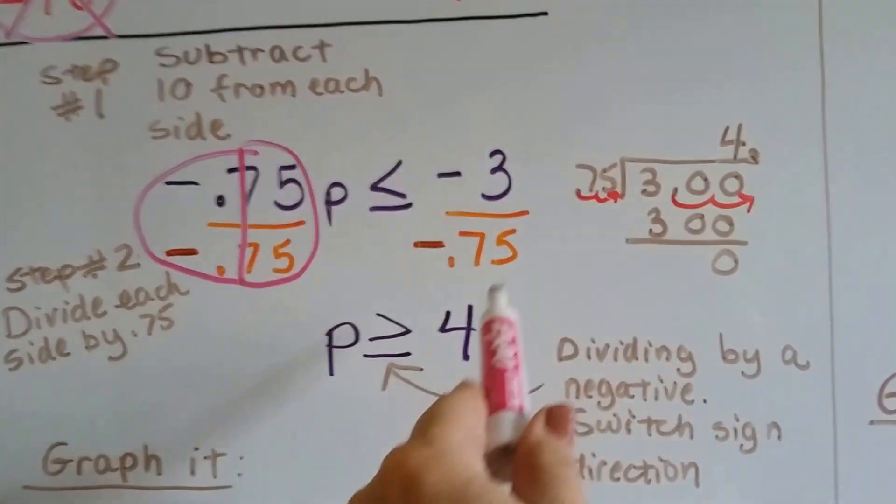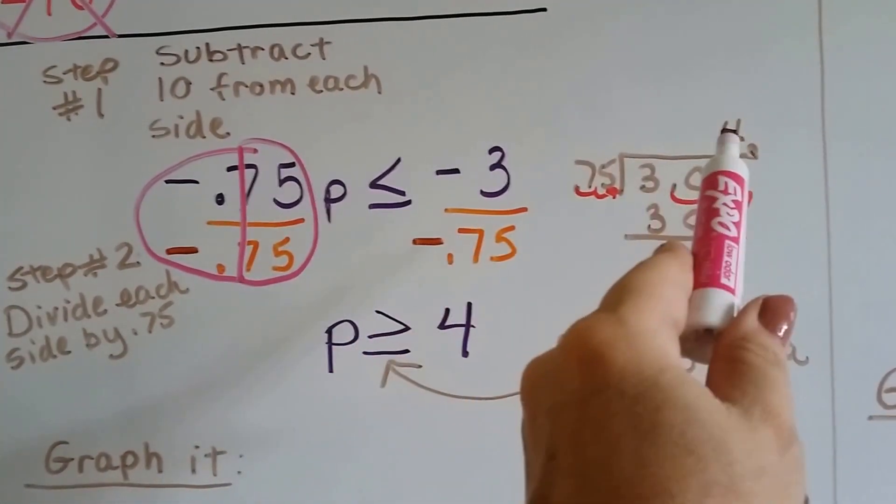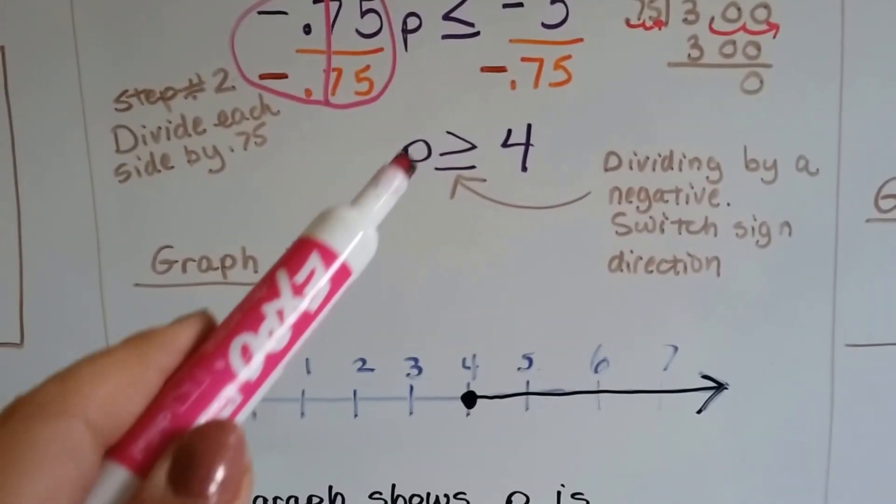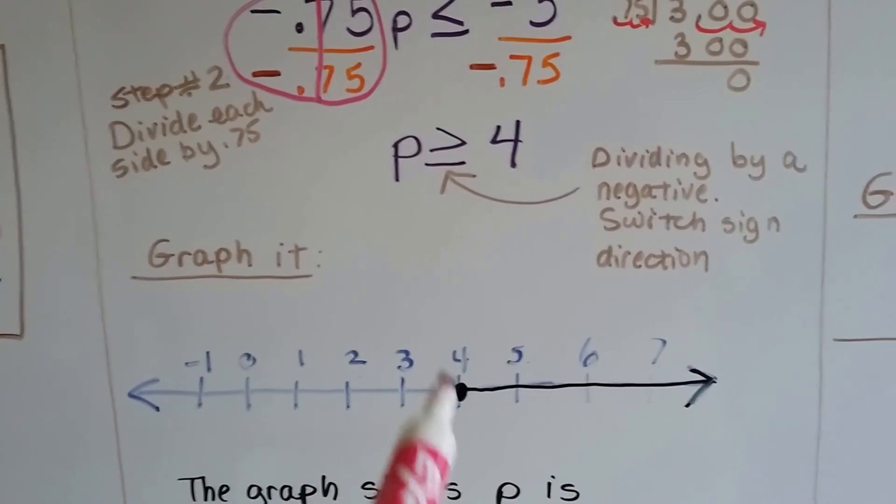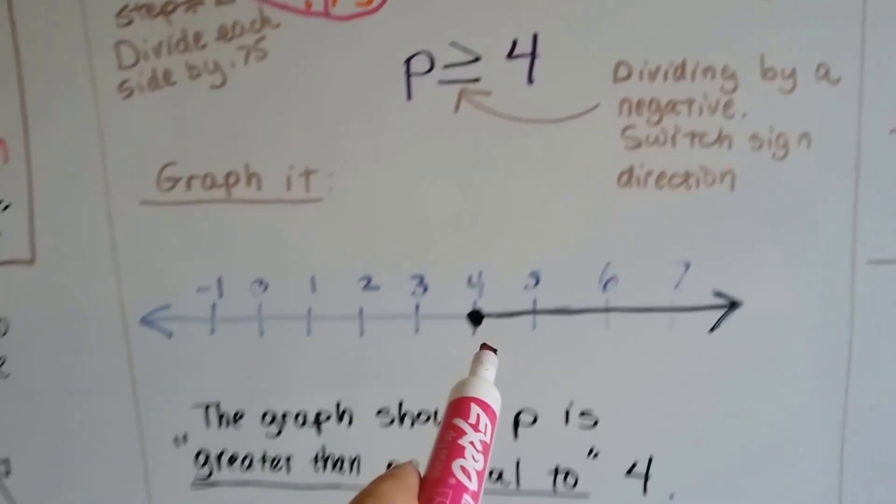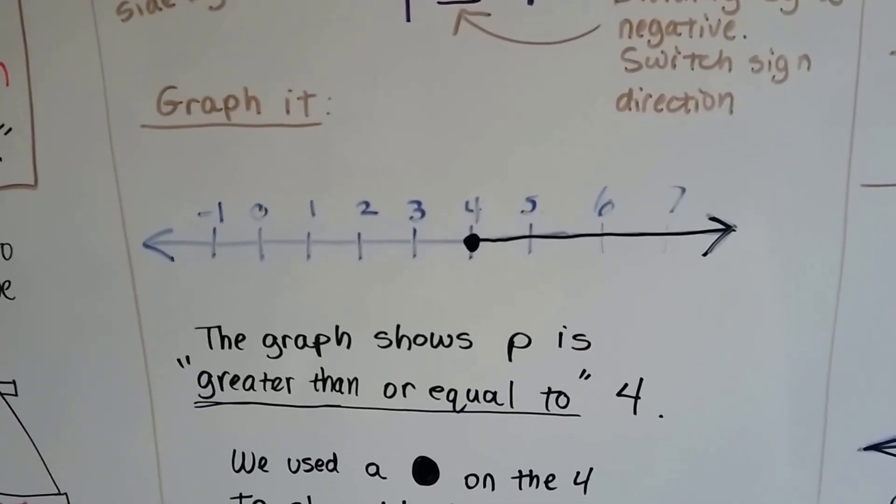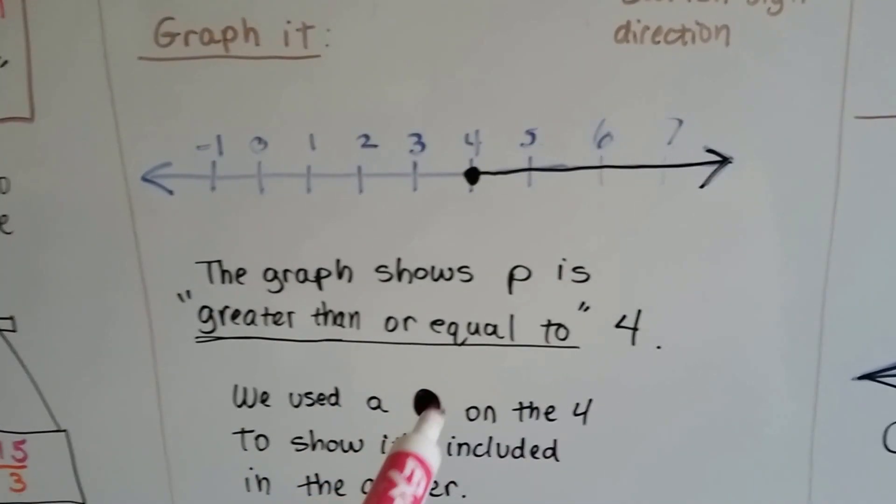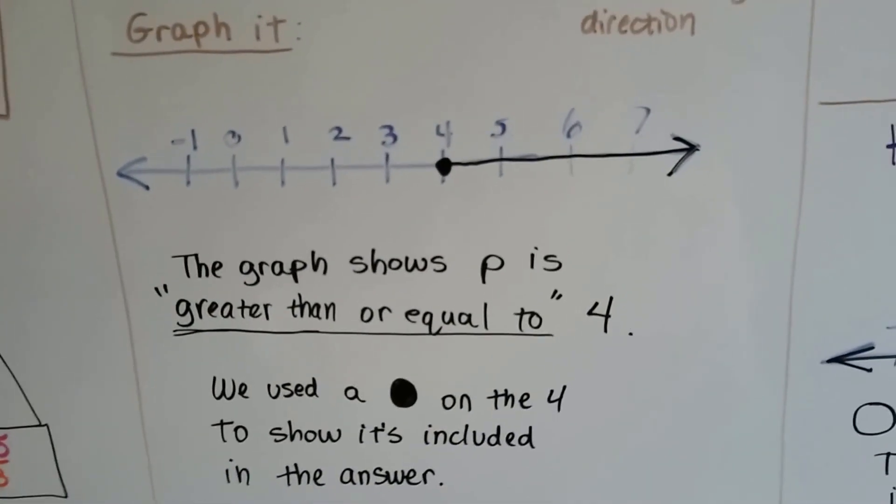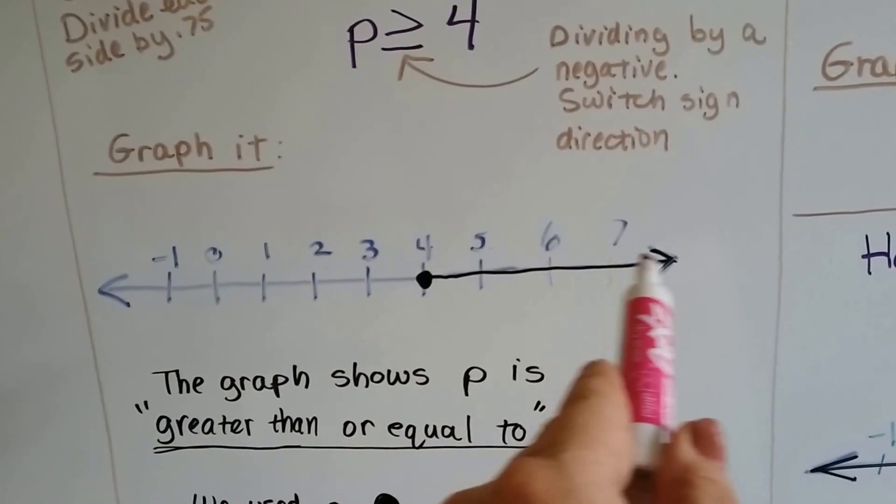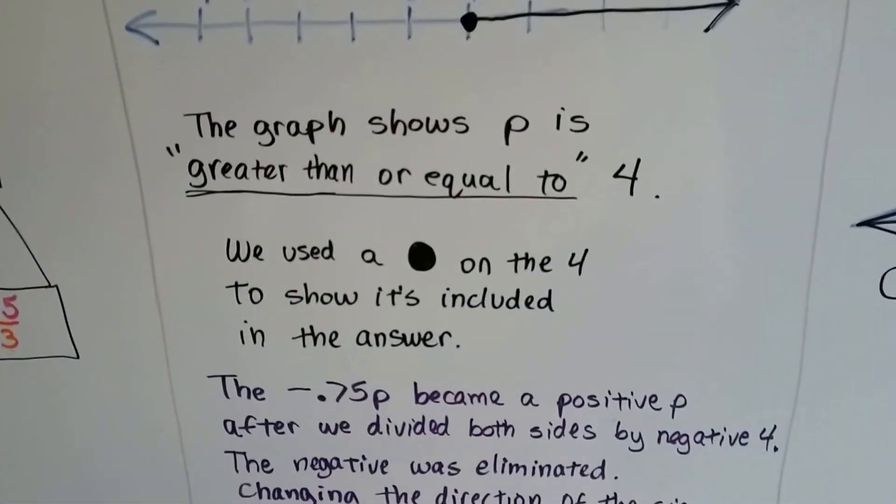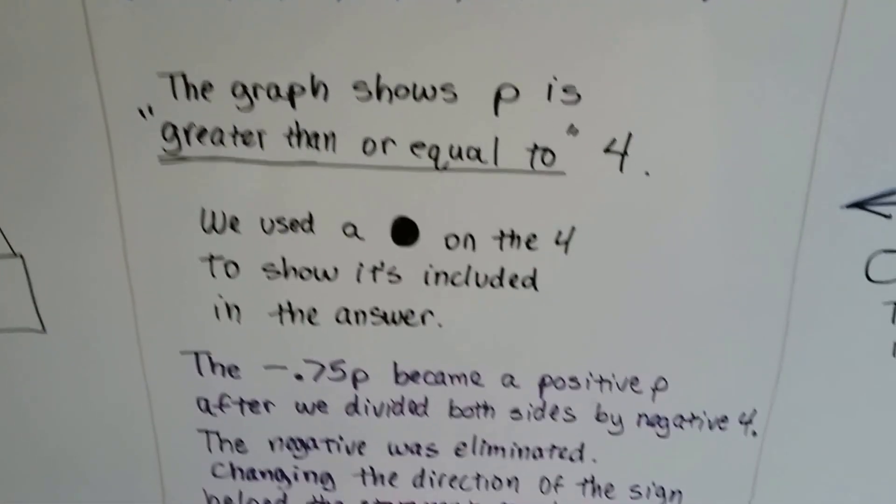And because we divided by a negative 0.75, we have to switch the sign's direction. So now p is greater than or equal to 4. We did our division. Negative and negative makes a positive, so it's a positive 4. Now to graph it, if p is greater than or equal to 4, then it includes 4 because it could be equal to it. So we use a black dot. We use this filled-in black dot because that means it's included in the answer. And then we drew our arrow showing all the greater numbers that it could be. It's greater than or equal to 4.